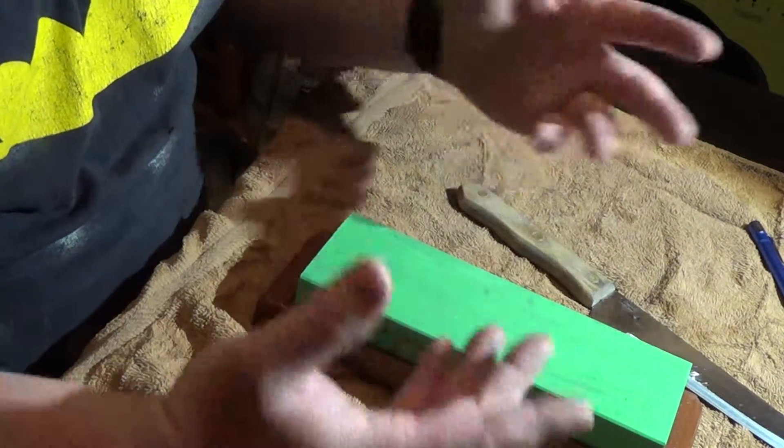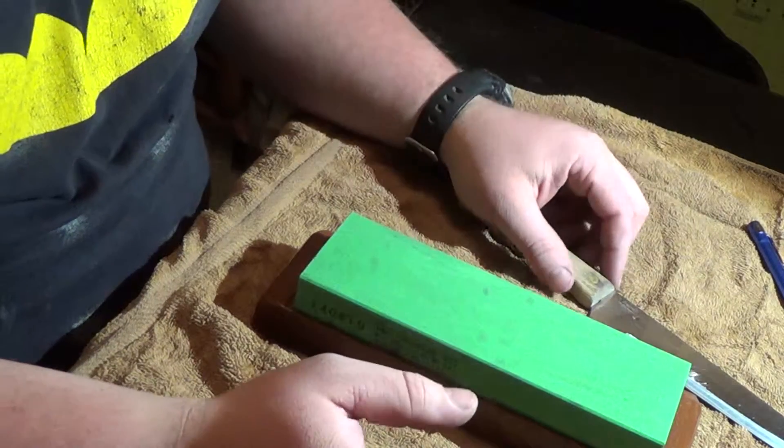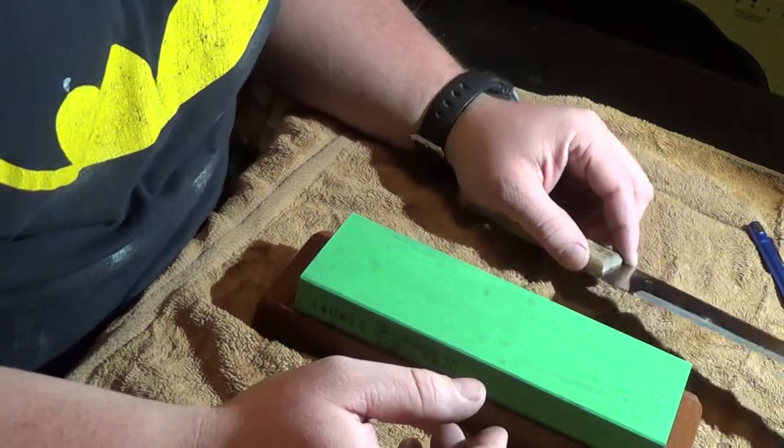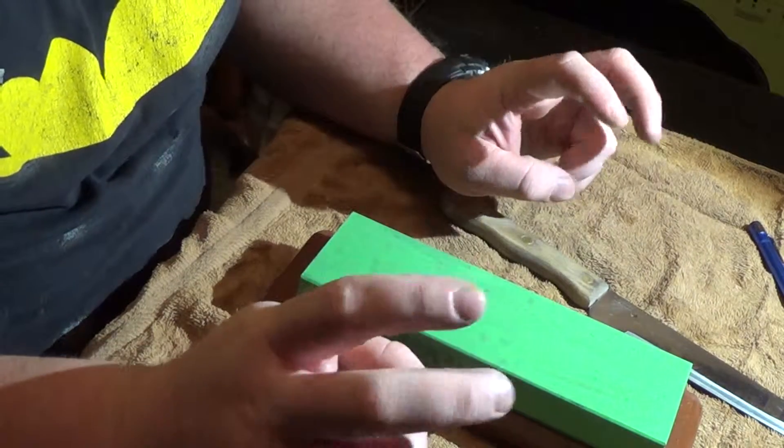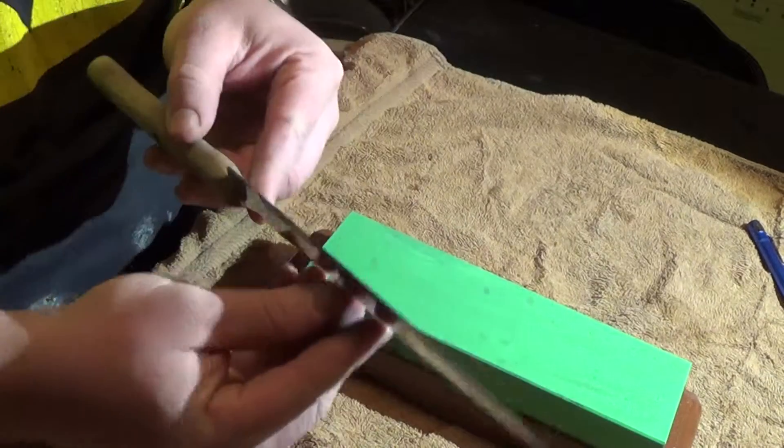After your coarse stone you should be able to reach paper cutting sharpness, and you should be able to achieve that relatively quickly depending on how dull your knife is.